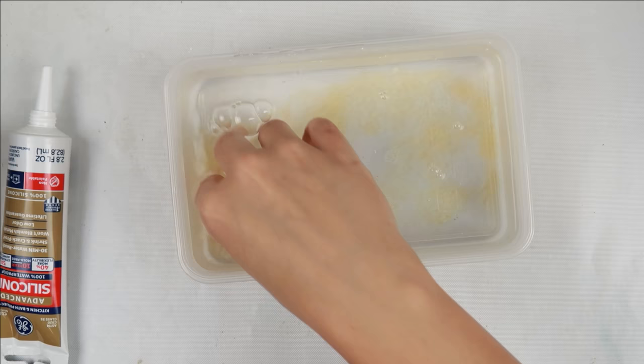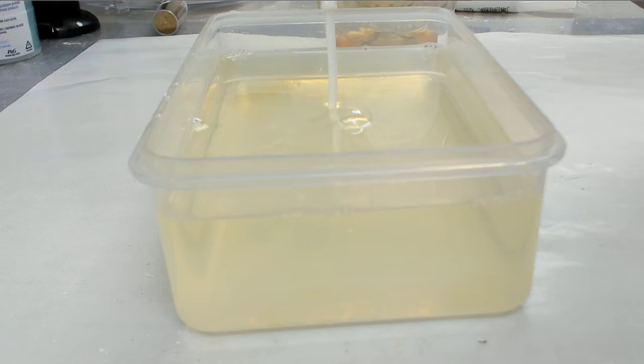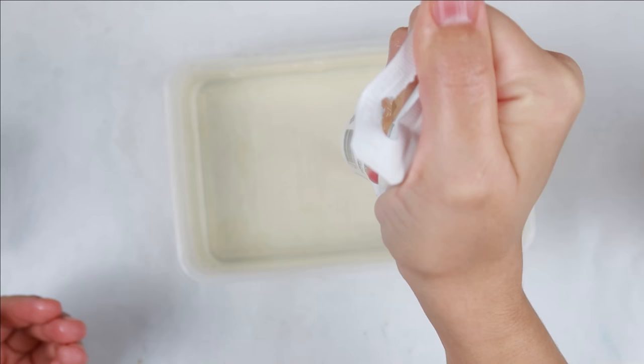You are going to put a little bit of the dish soap into the warm water and then you can mix it with your hands. This is going to help the silicone be less sticky. You are now going to take the silicone and put it into the warm water.